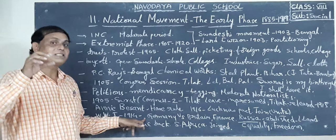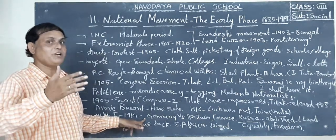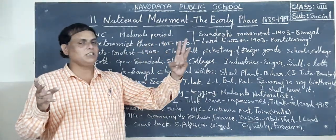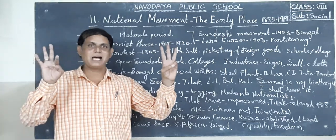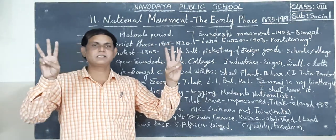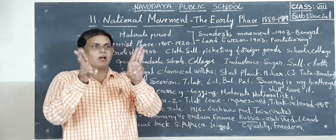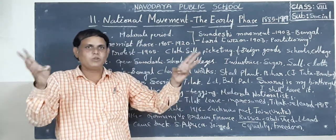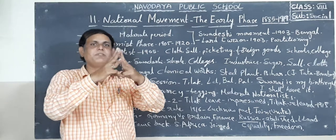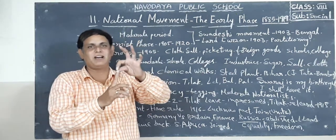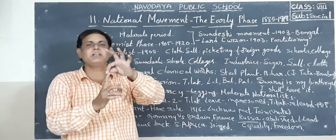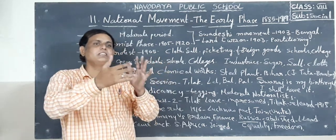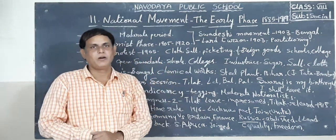In the First World War, England, France, and Russia formed one group, while Austria, Germany, and Hungary formed another group. When they fought each other, some countries joined each side. After the end of the war, Germany was defeated. But in 1917, Russia withdrew its participation from the war.